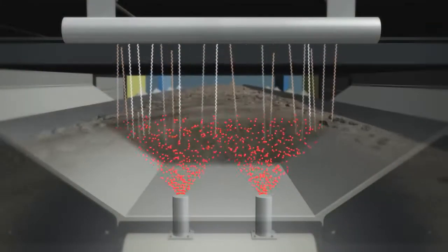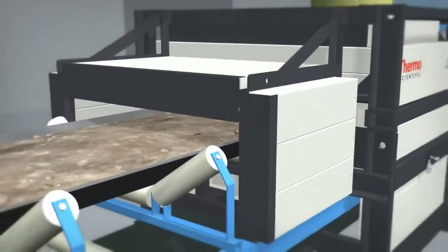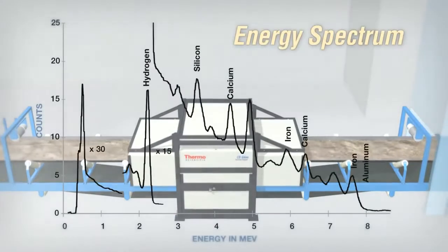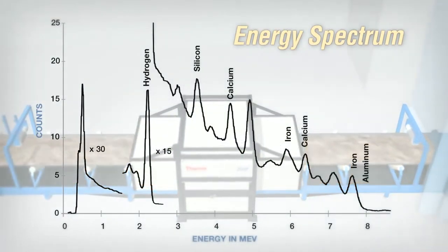The gamma rays are counted and their energies sorted by a detection mechanism. A spectrum of energies is then created and analyzed to give the percent concentrations of each of the elements in the raw materials.